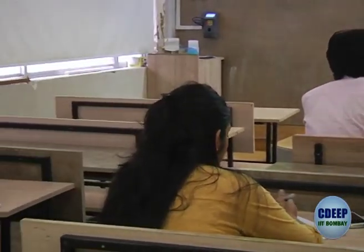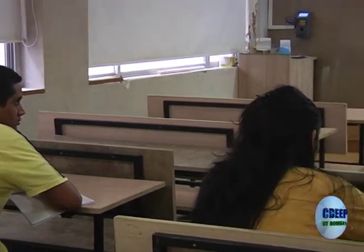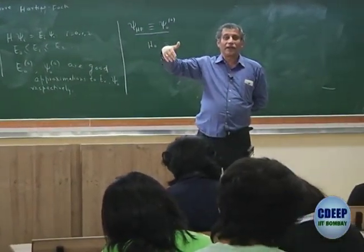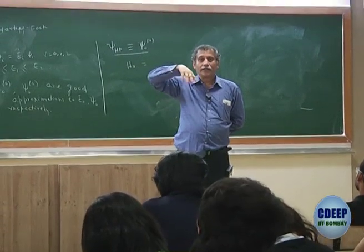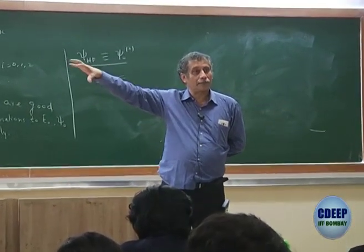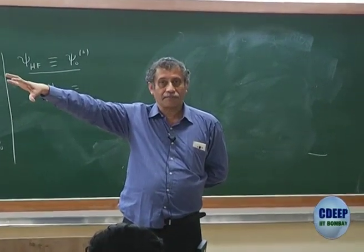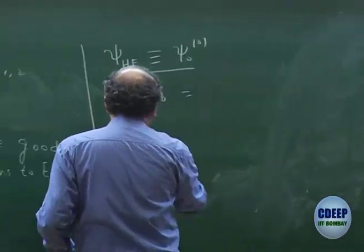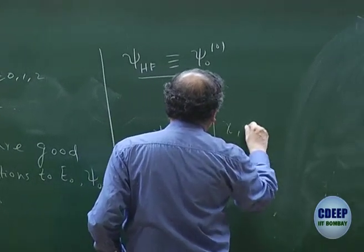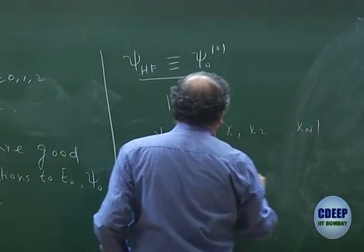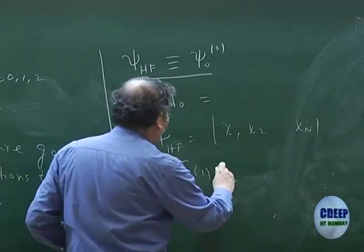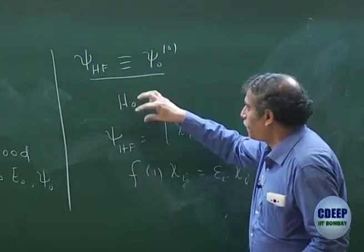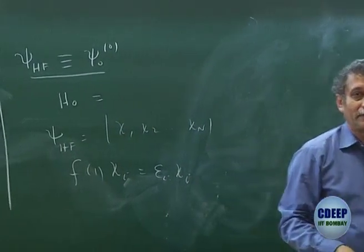Think in the reverse manner — we had a non-interacting theorem. Remember, in a non-interacting theorem, if an operator is a sum of one-particle operators whose solutions are known, then the total eigenfunction of that operator is a product of those one-particle functions. So now, do a reverse analysis. I have ψ_HF which is a product of spin orbitals χ₁, χ₂, ..., χₙ, and I know a one-particle operator F(1) whose eigenfunctions are these χᵢ's.